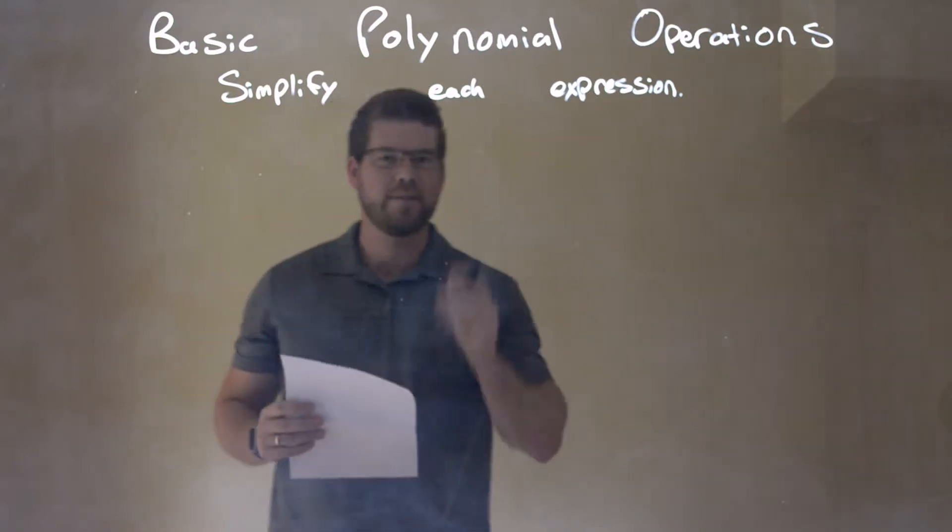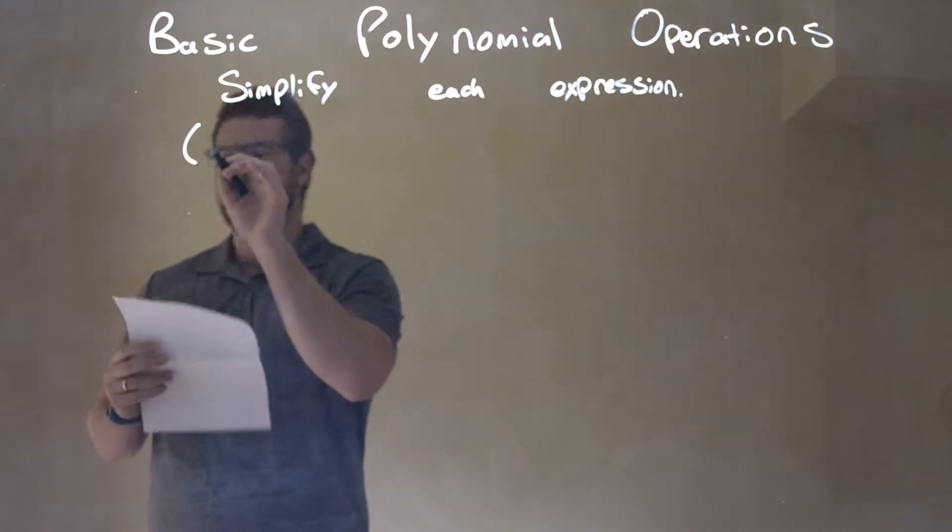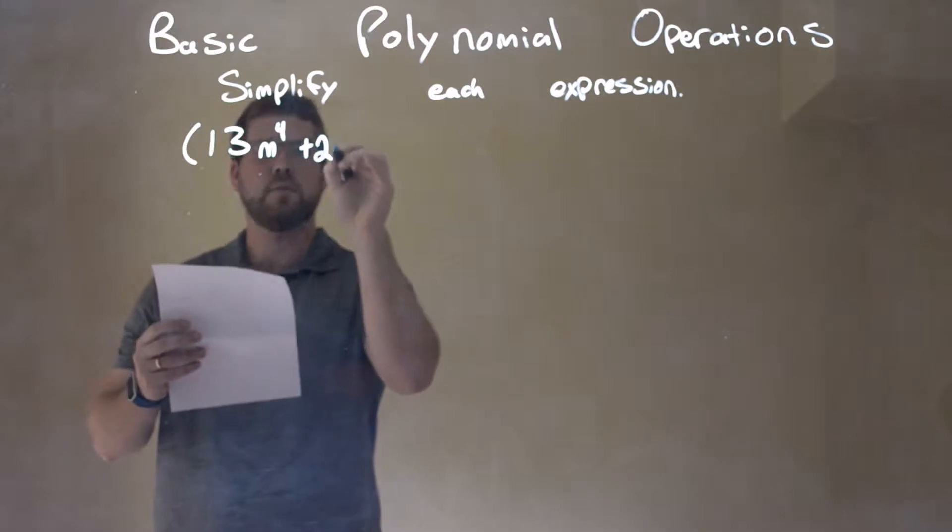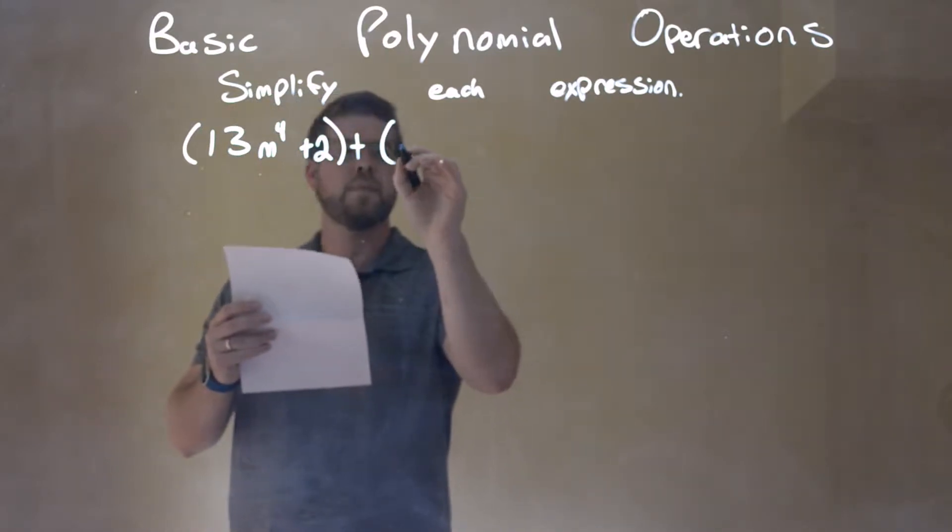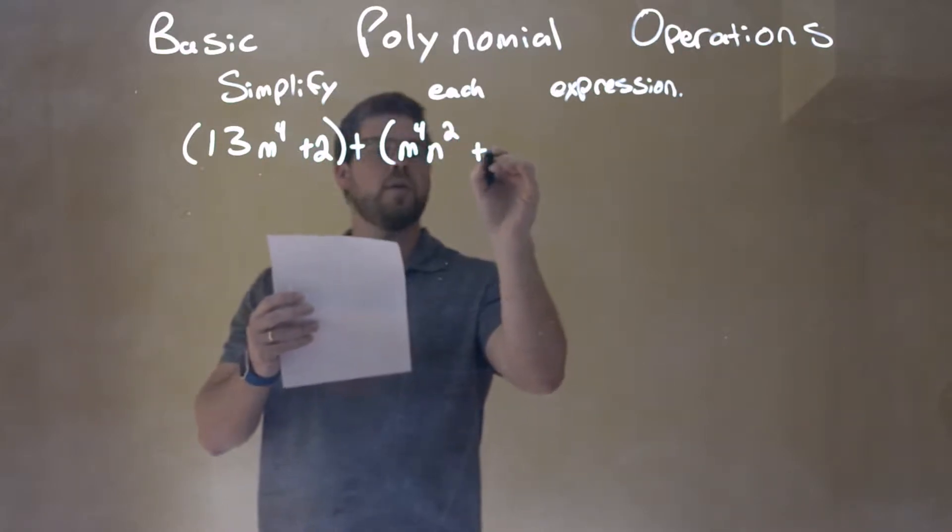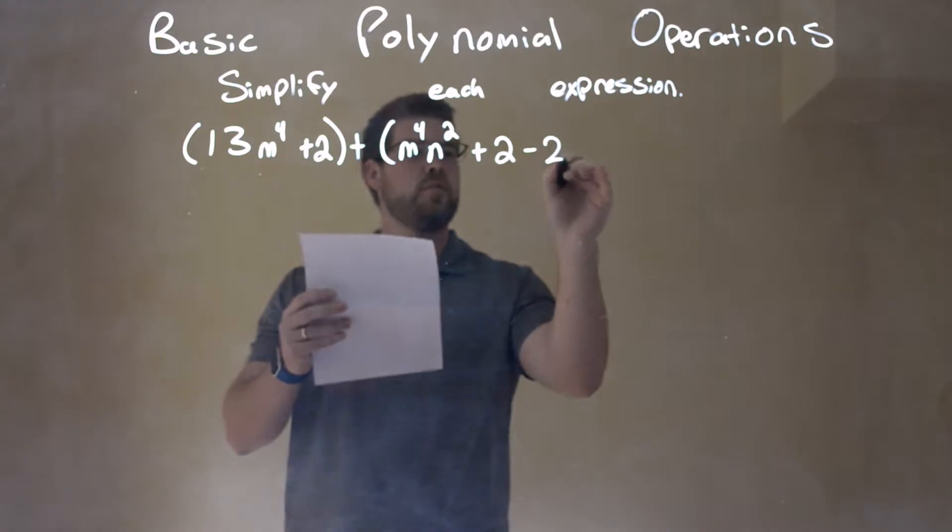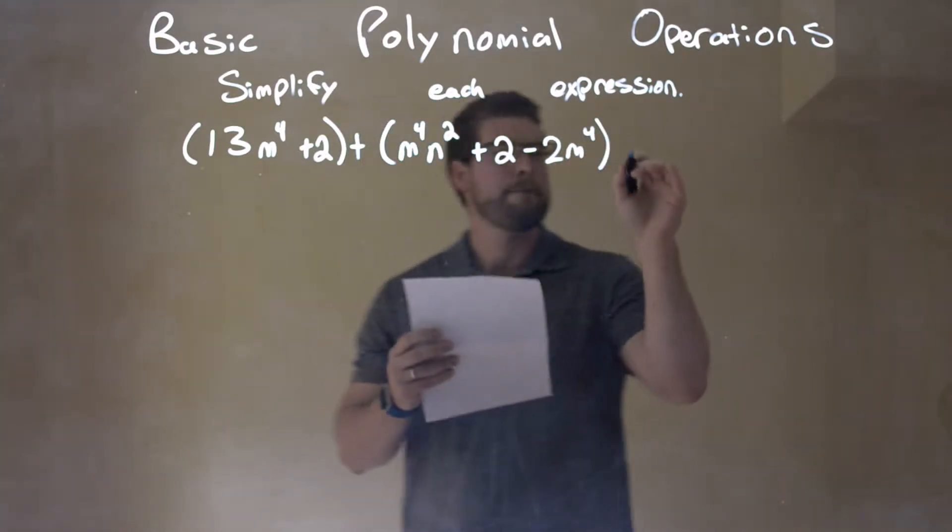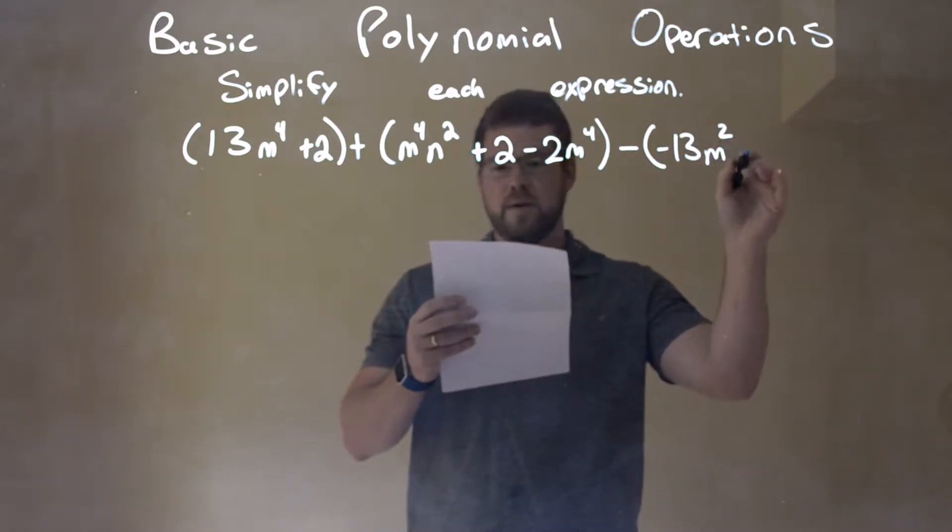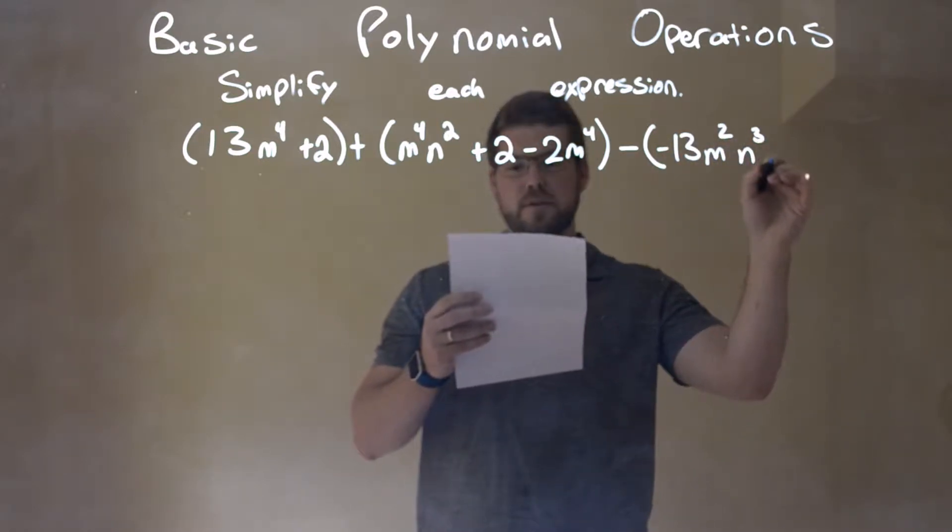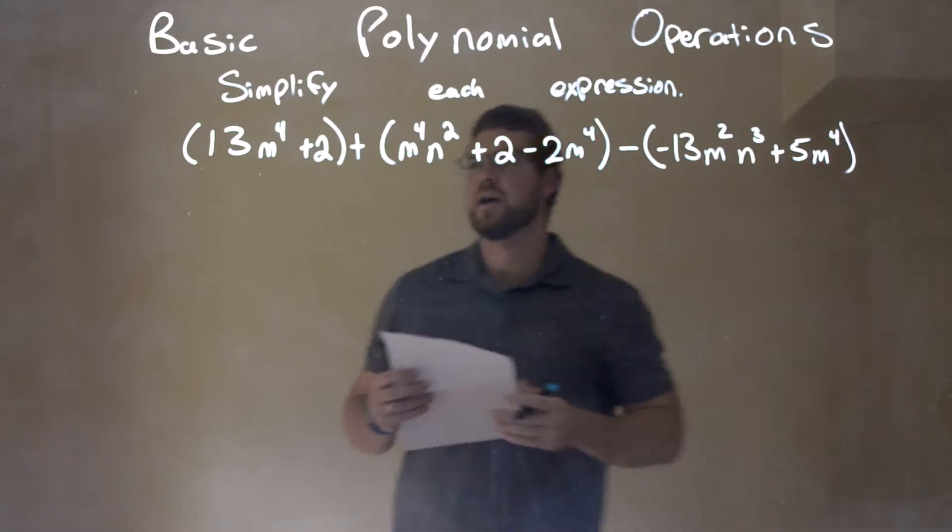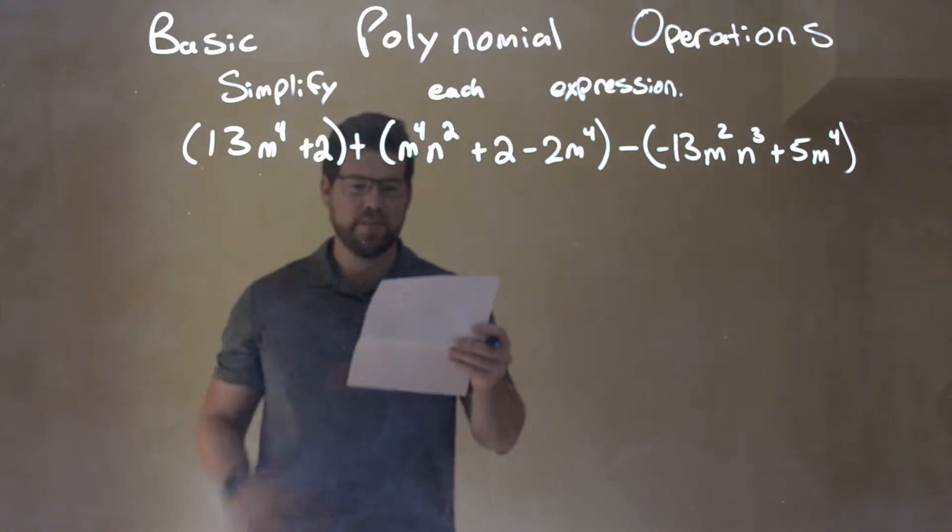So if I was given this expression: 13m to the fourth plus 2, plus another parenthesis, m to the fourth n squared plus 2 minus 2m to the fourth, minus negative 13m squared n to the third plus 5m to the fourth. Kind of a large polynomial here.